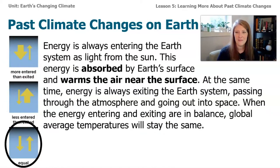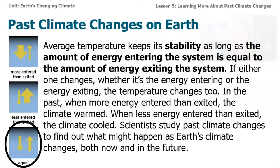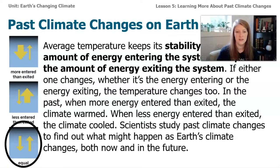The next paragraph says: 'Energy is always entering Earth's system as light from the sun. This energy is absorbed by Earth's surface and warms the air near the surface. At the same time, energy is always exiting Earth's system, passing through the atmosphere and going out into space. When the energy entering and exiting are in balance, global average temperatures will stay the same.' Average temperature keeps its stability as long as energy entering equals energy exiting. When either changes, temperature changes too. Scientists study past climate changes to find out what might happen as Earth's climate changes now and in the future.